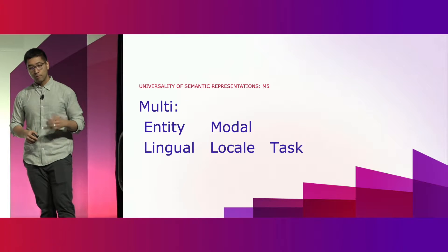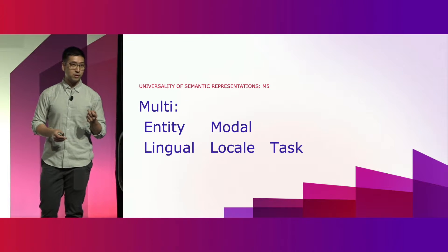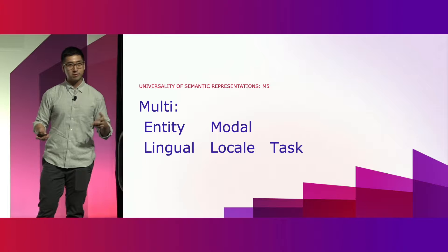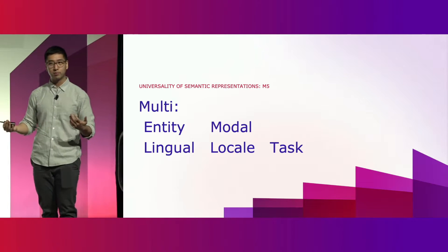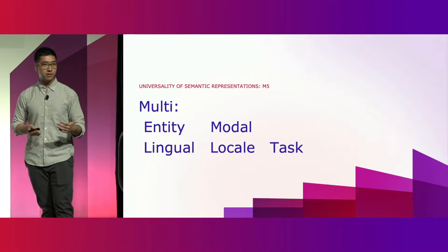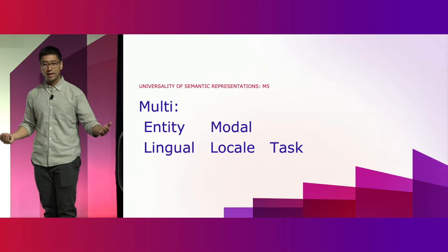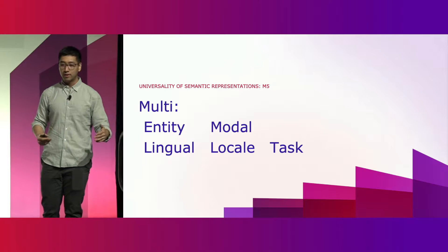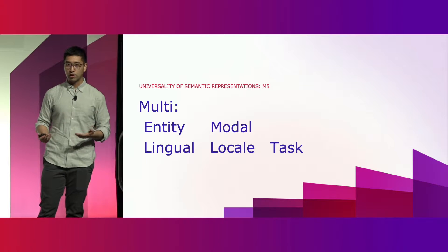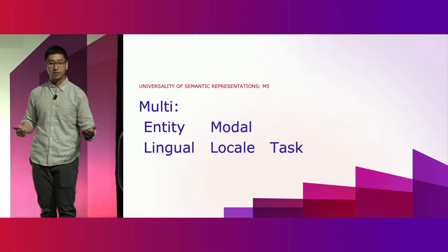Here are some examples of what we mean by Amazon entities — these are essentially things that make Amazon Amazon. We'd like to capture the semantics of these entities and represent them in some form factor, like a model or a mathematical vector. We want these semantic representations to be universal, and we can define universality across five different dimensions or categories, which is why the project is called M5.